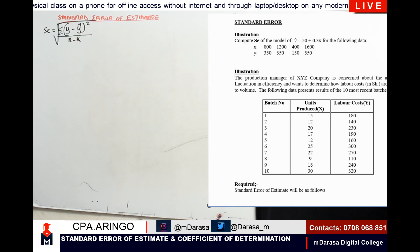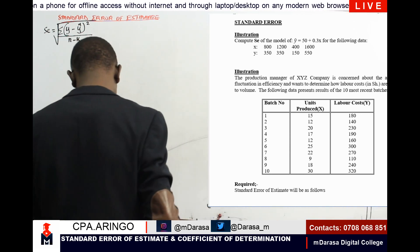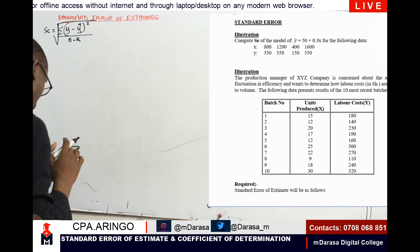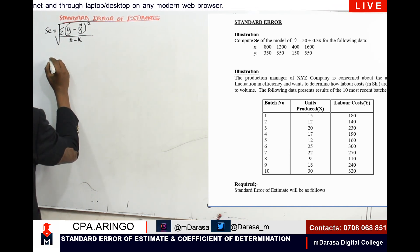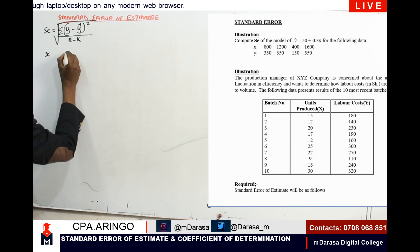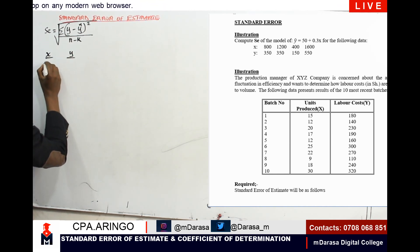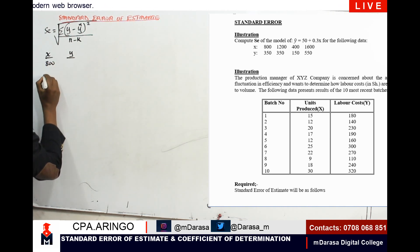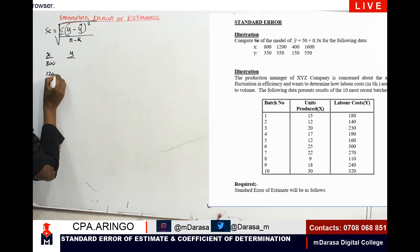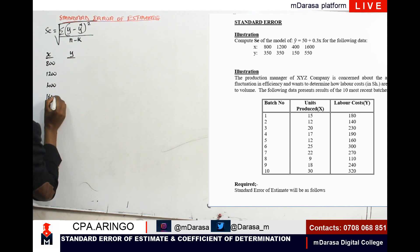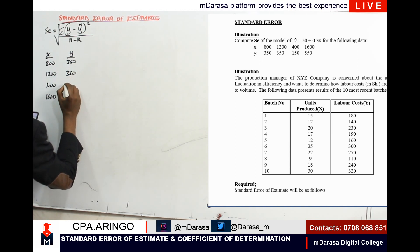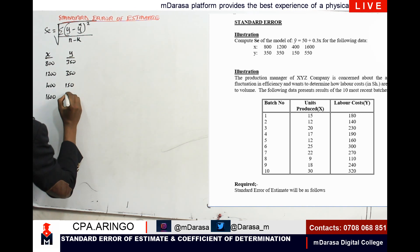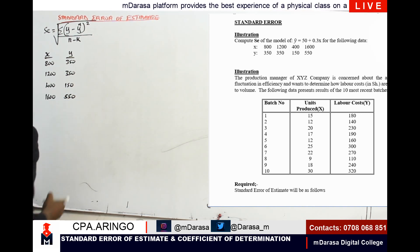This is what you are going to do. We are going to have the data values given in our question: X values are 800, 1200, 400, and 1600. The corresponding Y values are 350, 350, 150, and 550.